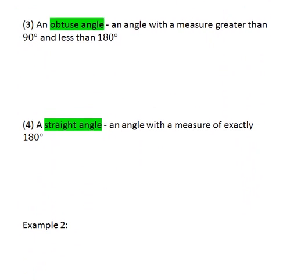Our next angle is an obtuse angle. An obtuse angle is an angle with a measure that's going to be somewhere in between 90 and 180.